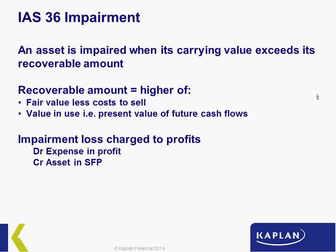To record the impairment loss, you write the asset down from carrying value to recoverable amount, crediting the asset in the SFP and debiting the impairment loss as an expense to profit. There is an exception: if the impairment relates to an item of PPE previously revalued, you charge the impairment against the revaluation reserve first, then against profits. The main principle is: debit expense, credit the asset — ensuring our assets are not overstated.